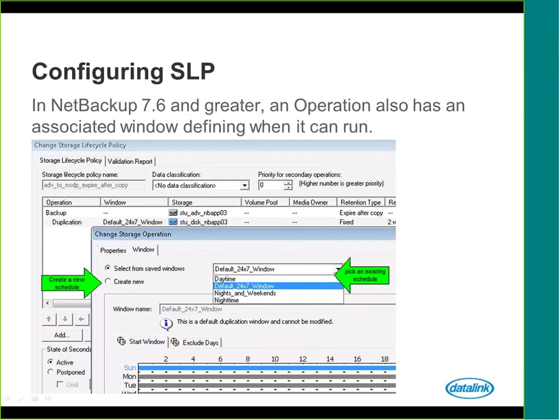With NetBackup 7.6 and greater, beginning in 7.6, Veritas introduced a scheduling feature much like policy schedules defining the backup. In 7.5, whenever a backup would finish and it was part of an SLP, that SLP would generally kick off within 5 to 30 minutes. With 7.6, you can now control when you want those replication and duplication steps to happen. You can either create a new window when defining the SLP, or if you already have an existing window that was already created, you can select that as well.